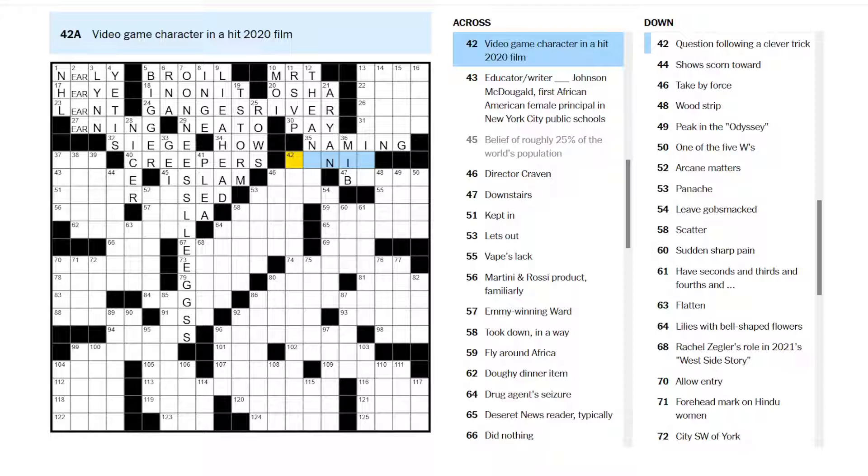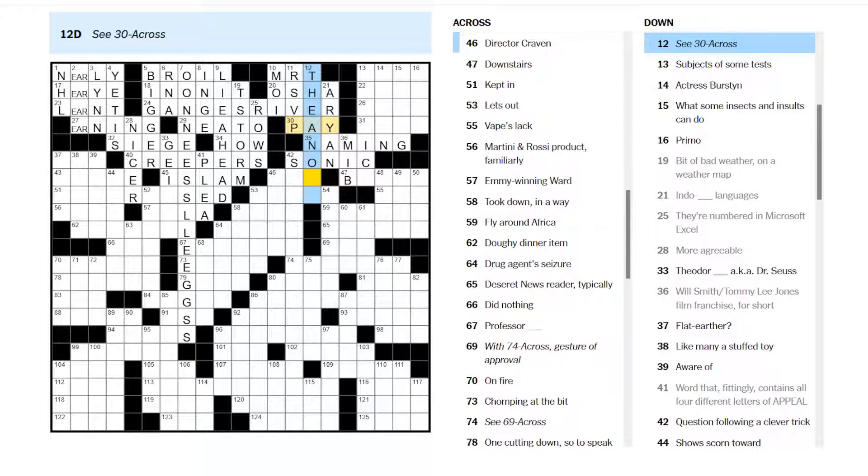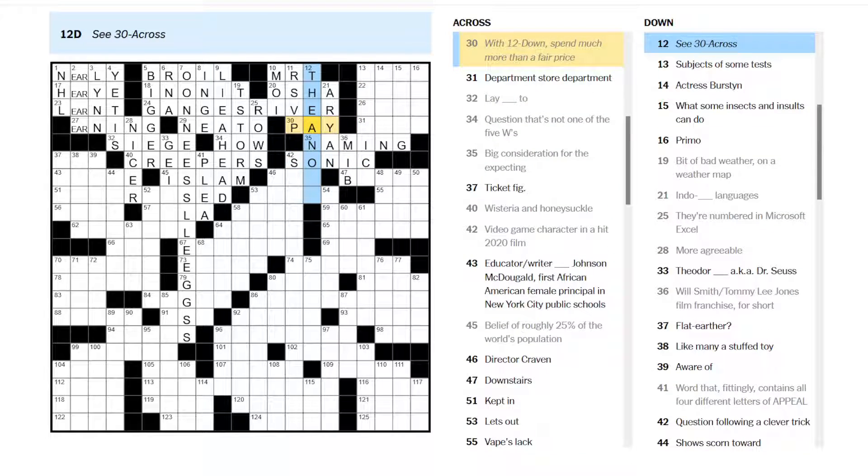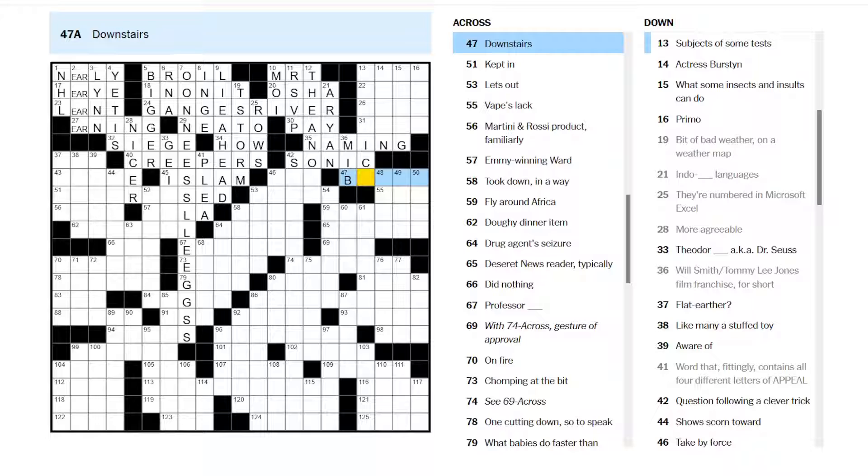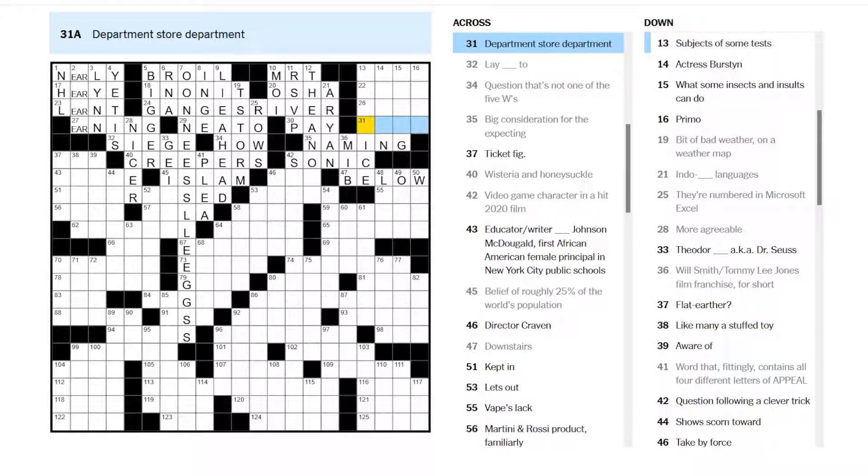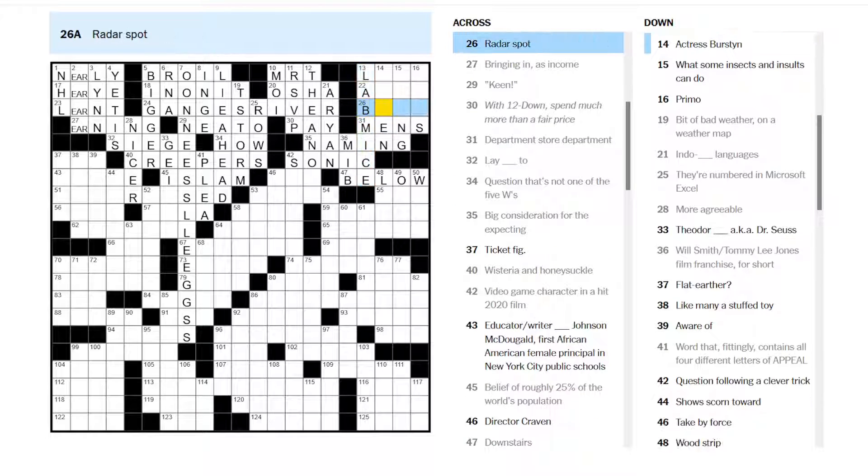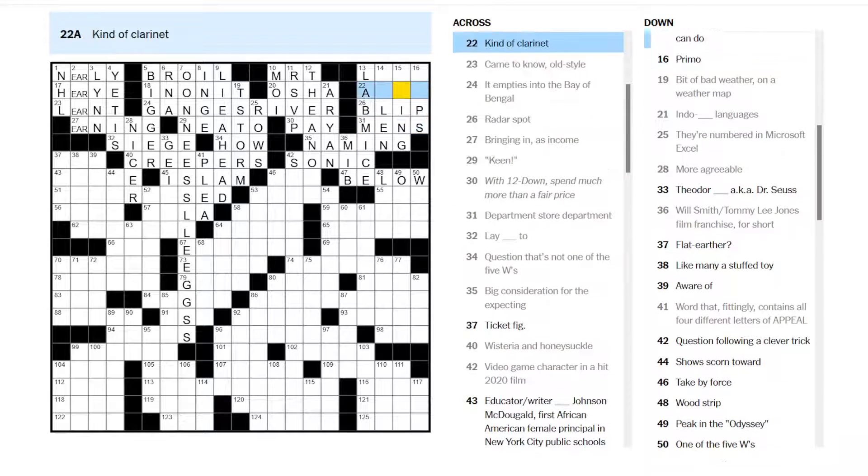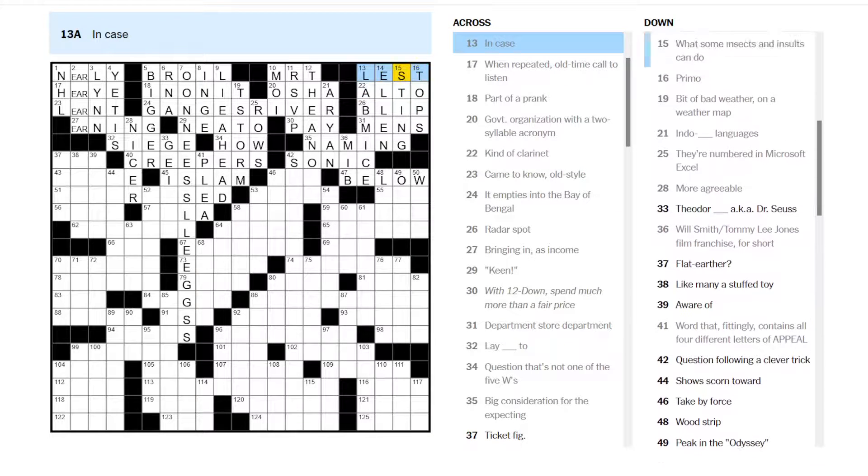Maybe just naming is a big consideration. Video game character in a hit 2020 film. Sonic? Was that in 2020? Pay the A note? What is this? Subjects of some tests. Not sure. Downstairs. Below. Department store department. Maybe men's. Lab mice. Would be subject to some tests. Radar spot is a blip. An alto clarinet. And lest in case. Let's check these crosses.